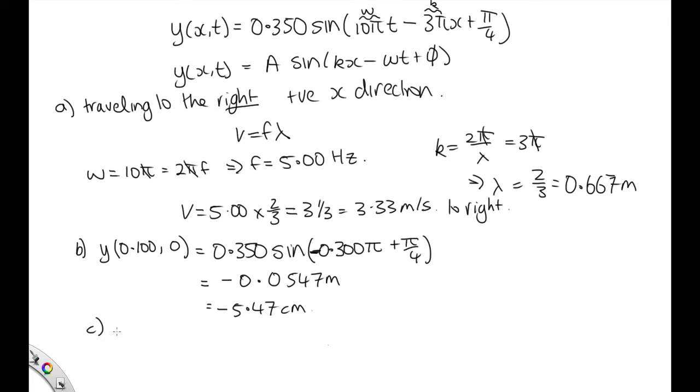Now part C asks us to find the wavelength. We've already found it is 2 thirds of a meter. We found it over here. And part D asks us to find the frequency. We've already found that. The frequency is equal to 5.00 hertz.